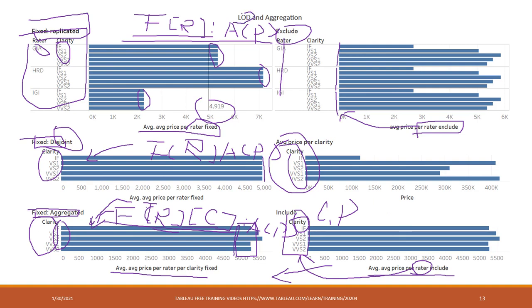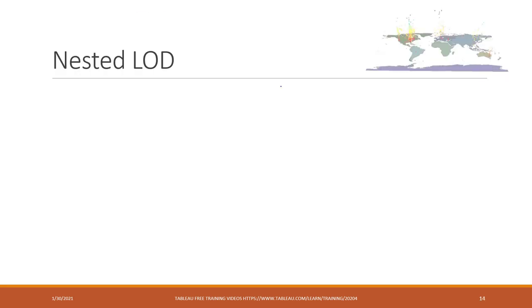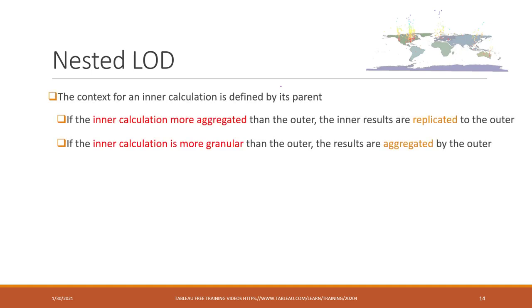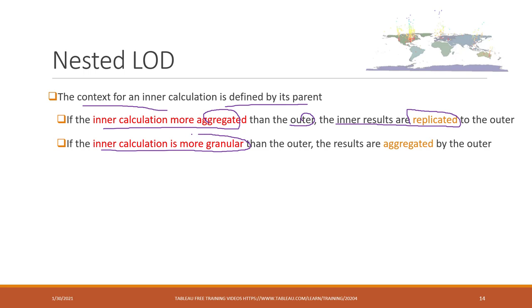It is very important to understand LOD and aggregation — otherwise you may make mistakes in Tableau. Finally, the LOD can be nested. We won't use that in the lab, but just so you know: the content for the inner circle is defined by its parent. If the inner calculation is more aggregated than the outer, the inner result will be replicated. If the inner calculation is more granular than the outer, the result will be aggregated by the outer nested LOD.